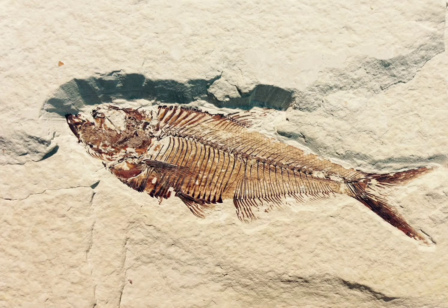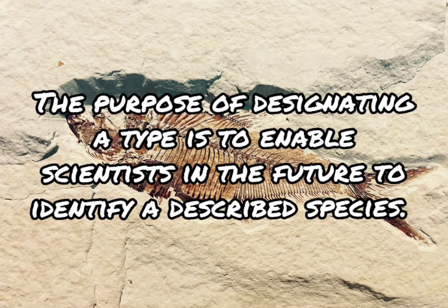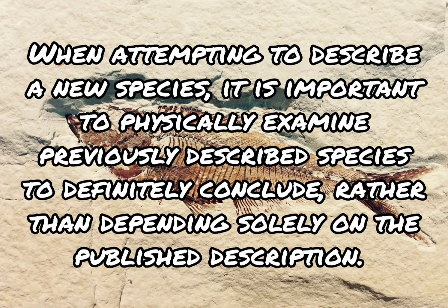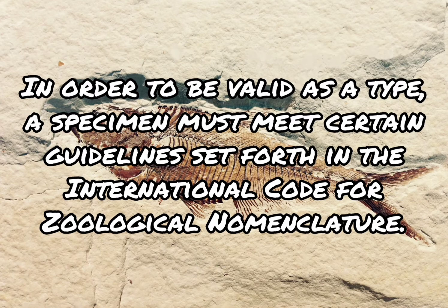The purpose of designating a type is to enable scientists in the future to identify a described species. When attempting to describe a new species, it is important to physically examine the previously described species to definitely conclude, rather than depending solely on the published description. In order to be valid as a type, a specimen must meet certain guidelines set forth in the International Code for Zoological Nomenclature.